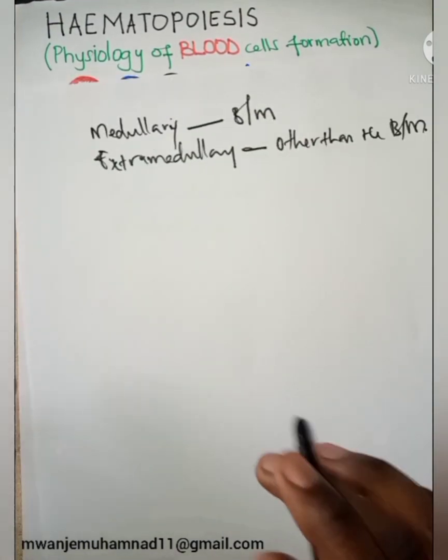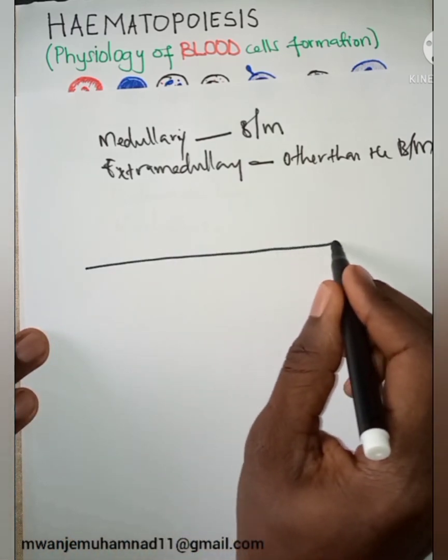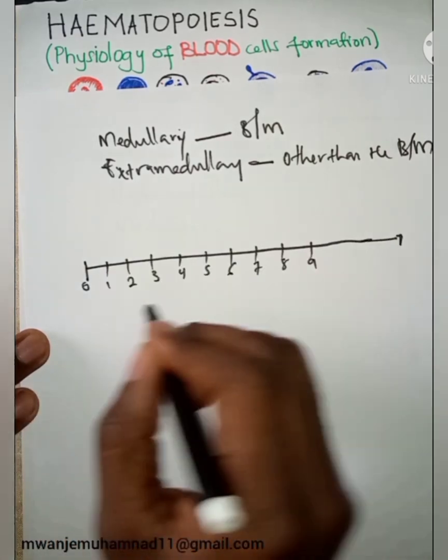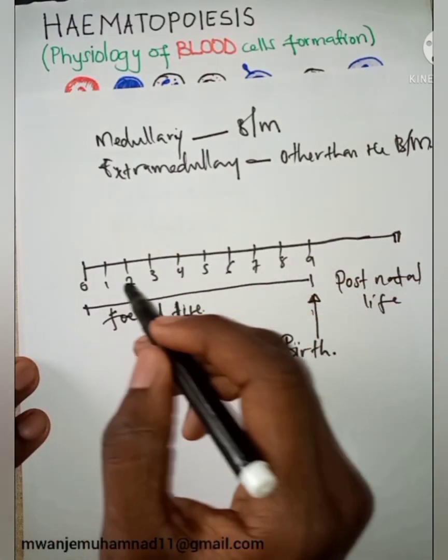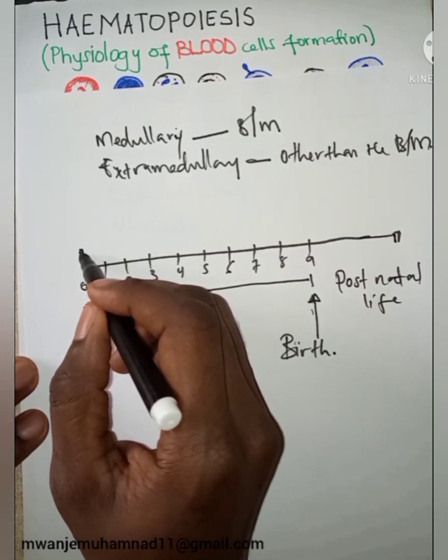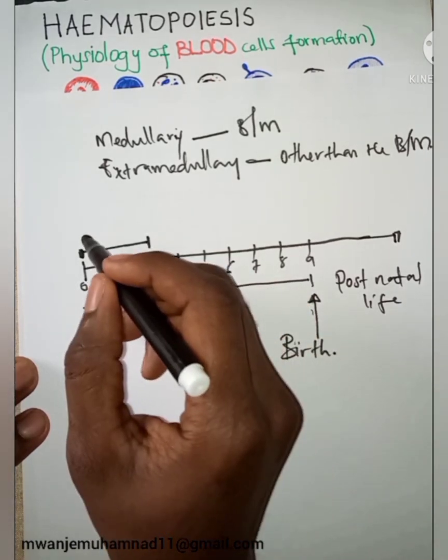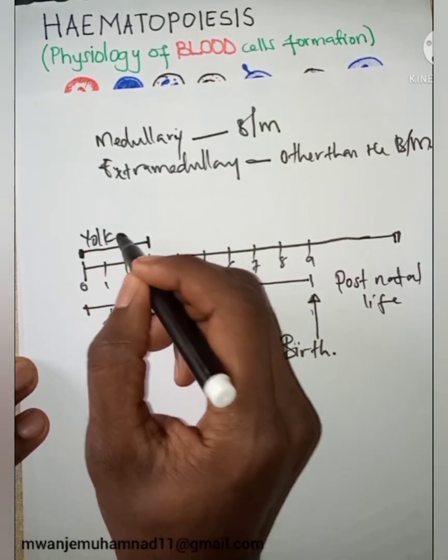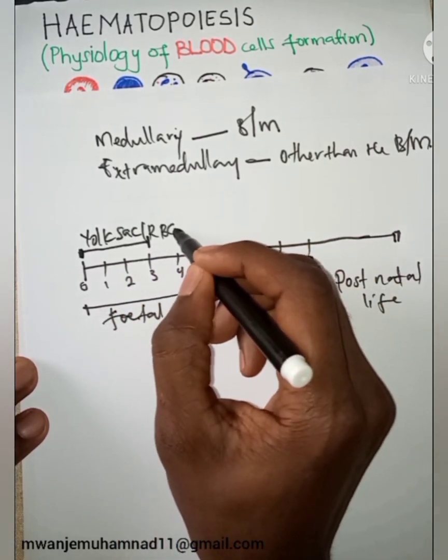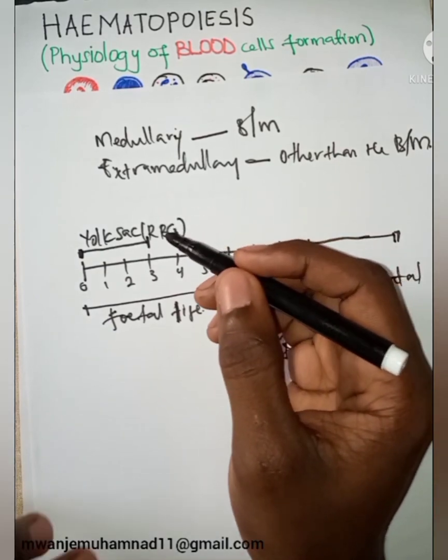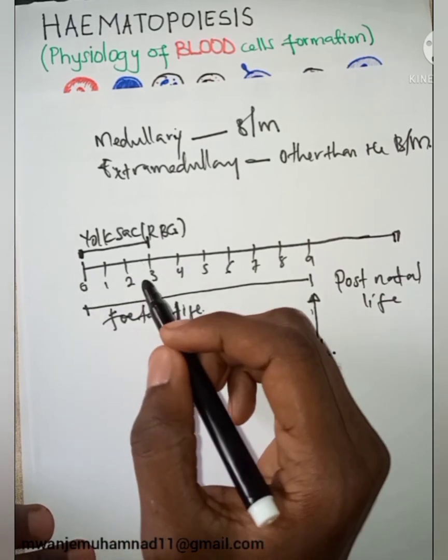If we take a look at this simple illustration from zero days up to the end of the first trimester, we shall see that the yolk sac is producing cells, and this majorly produces erythrocytes because erythrocytes are needed in organogenesis and other roles.